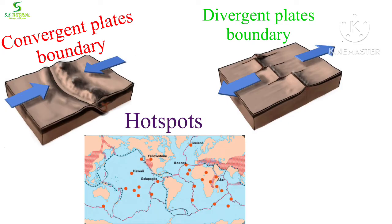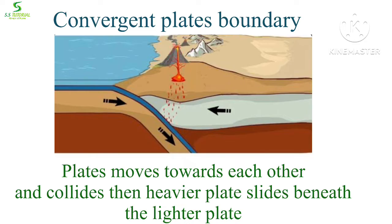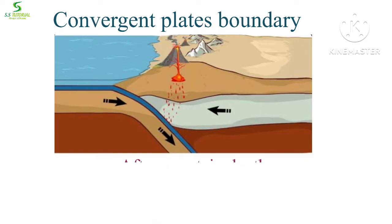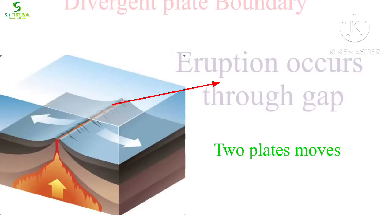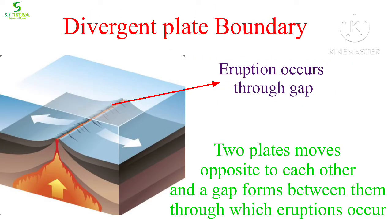Convergent and divergent plate boundaries and some hot spots are more volcanic-prone areas. A convergent plate boundary is an area where two plates move towards one another and collide. After a certain depth, the plate is heated and partially melted. These melted rocks erupt through the earth's crust and form volcanoes. Most volcanoes originate this way.